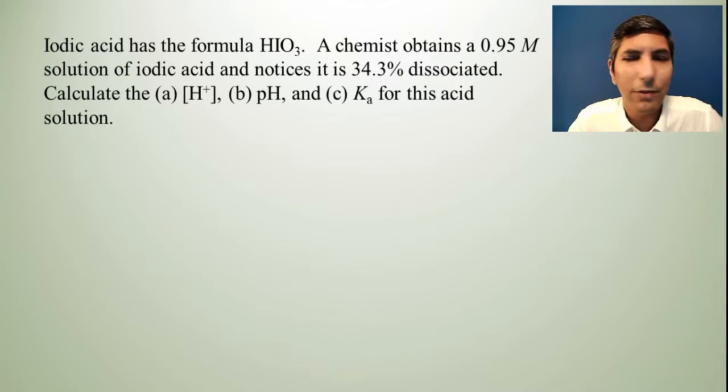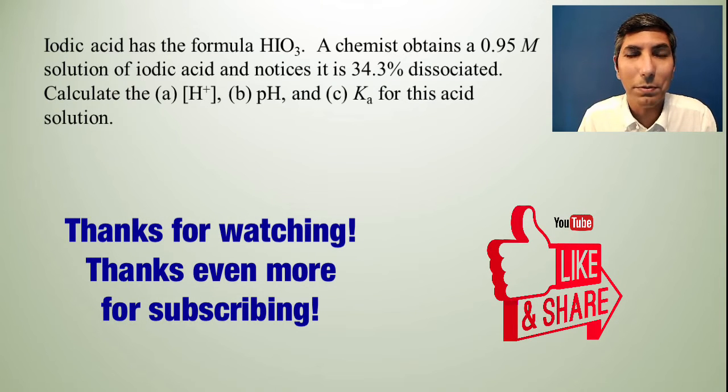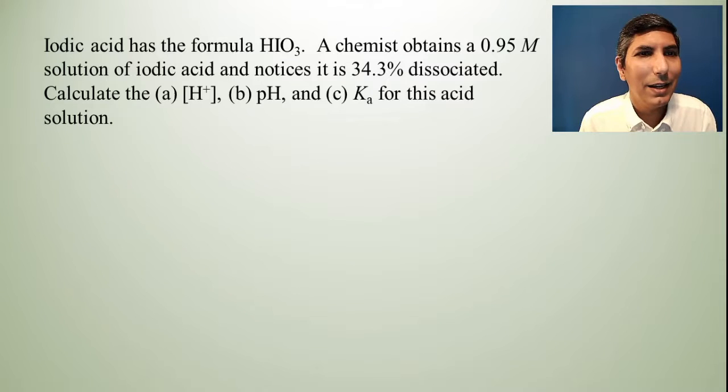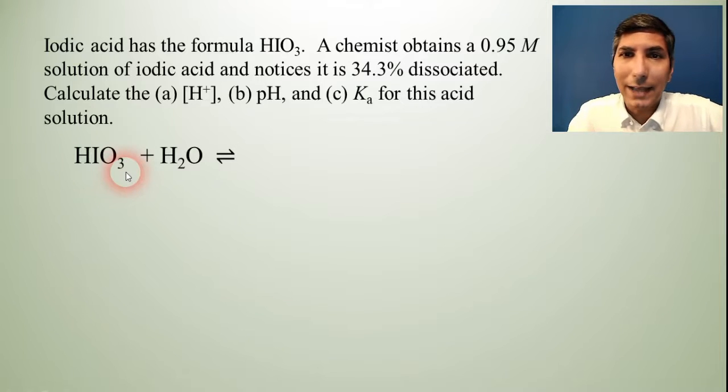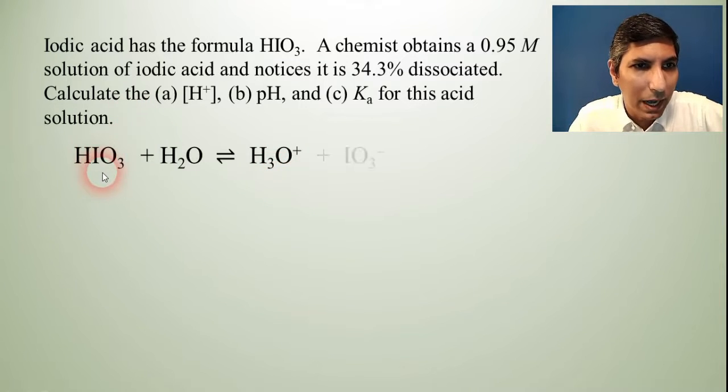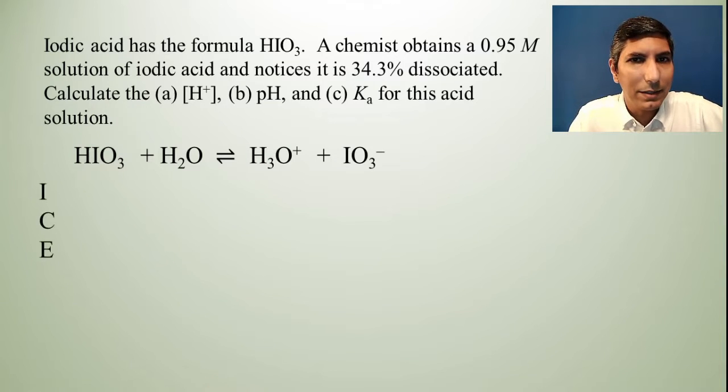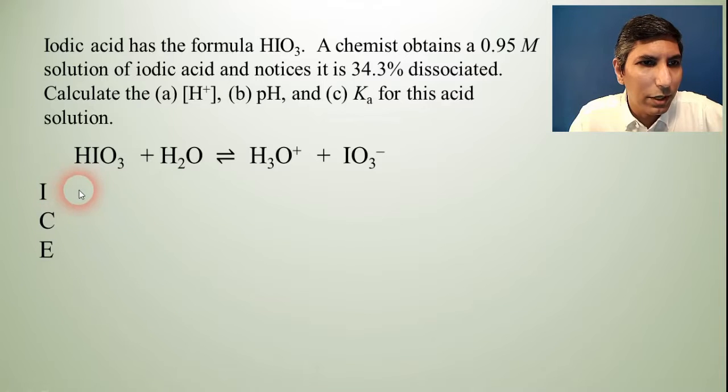Let's try another one. Here we have iodic acid has the formula HIO3. A chemist obtains a 0.95 molar solution of iodic acid and notices that it is 34.3% dissociated. Calculate the hydrogen ion concentration, the pH, and the Ka for this acid solution. So what we're going to have to do first of all is write out our equation. So we have HIO3 and of course it's added to water and the products for any acid dissociation will always be hydronium and the conjugate base of whatever you started with. So that would be IO3 negative.